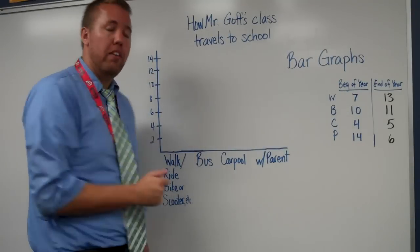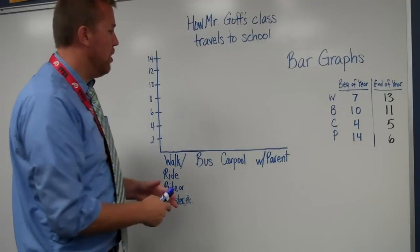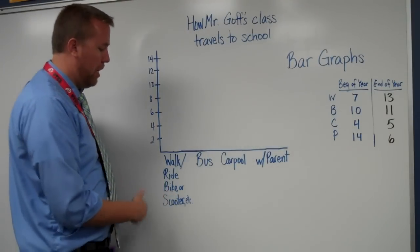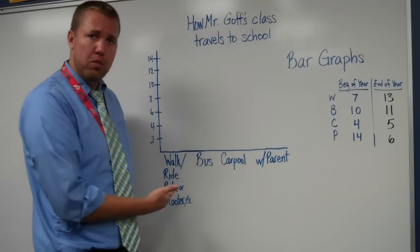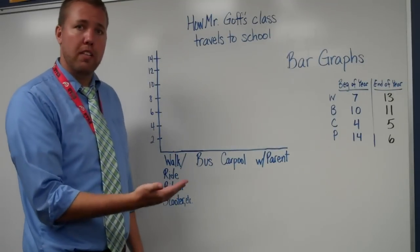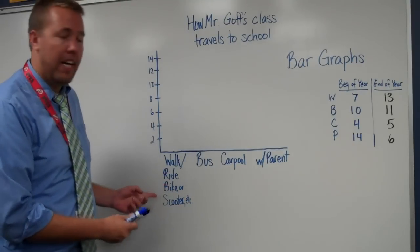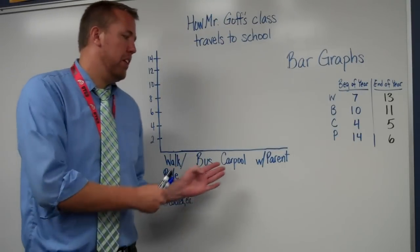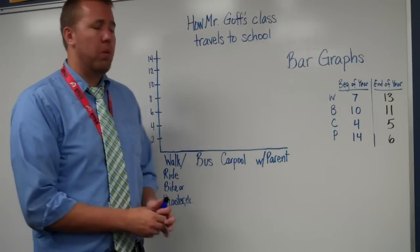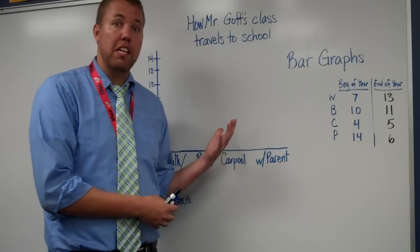This one shows how students travel to school. As I'm looking at this, I have the graph and the data on the bottom. The questions I asked when I polled my students: how do you get to school? I've got walking or riding their bike or scooter, taking the bus, carpooling, or riding with their parent. When I polled them, I got data that can be shown.